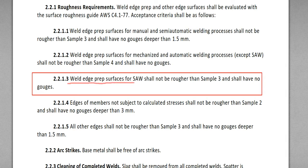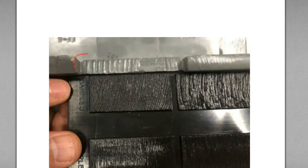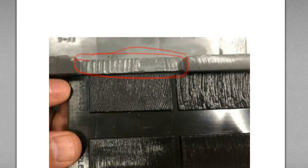Weld edge preparation surfaces for SAW shall not be rougher than sample 3 and shall have no gouges. Weld edge preparation surfaces means something like this — here you can see the cut surface. This is not the bevel angle preparation or bevel roughness surface. But in actual CWI Part B questions, you can see this kind of cut surface.